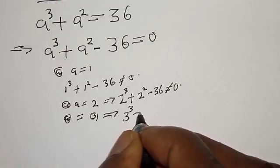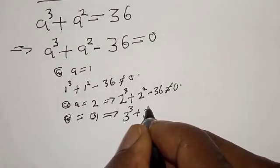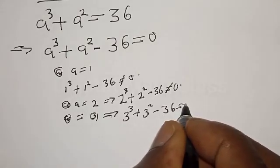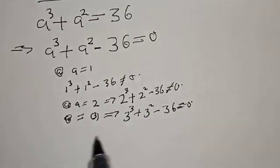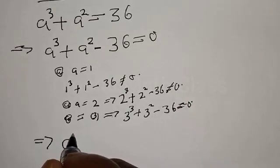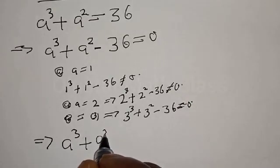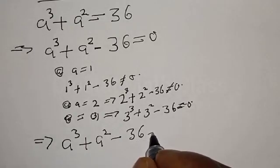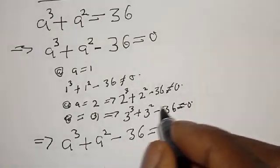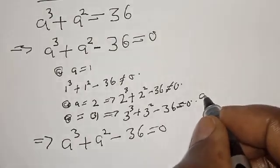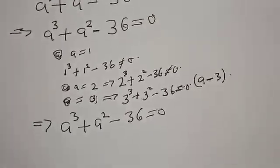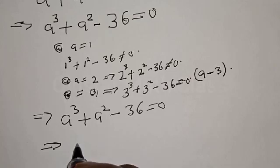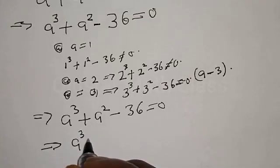At a equal to 3, we have 3 raised to power 3 plus 3 squared minus 36, and this is now equal to zero. Therefore, a minus 3 is one of the roots. This implies that we have a raised to power 3 plus a squared minus 36 equal to zero, and we can write it as a raised to power 3 minus 3 raised to power 3 plus a squared minus 3 squared equal to zero.